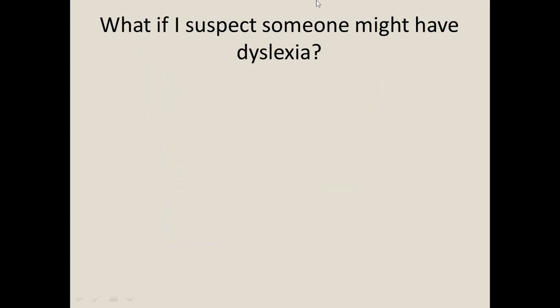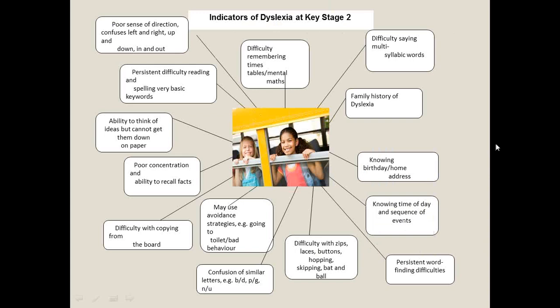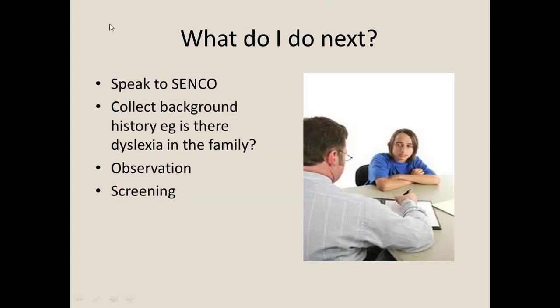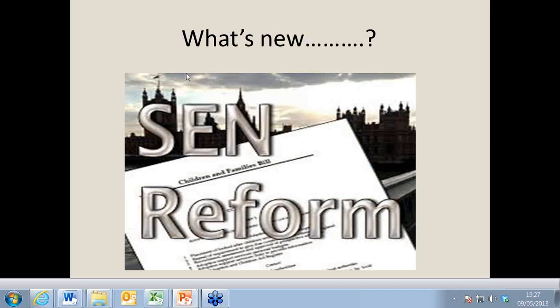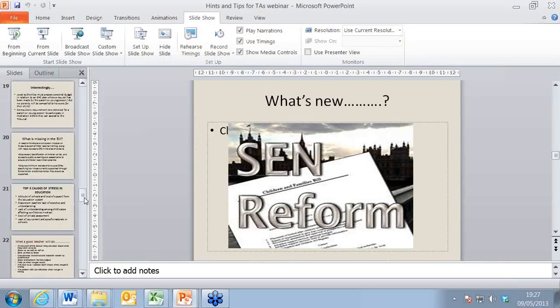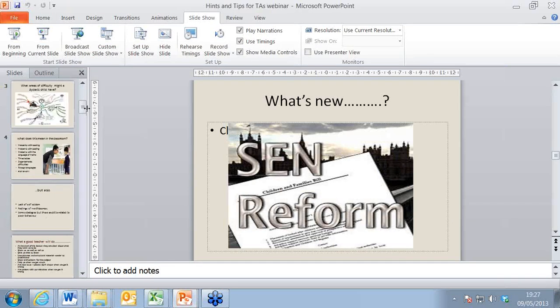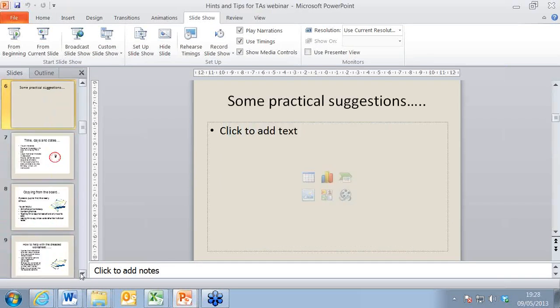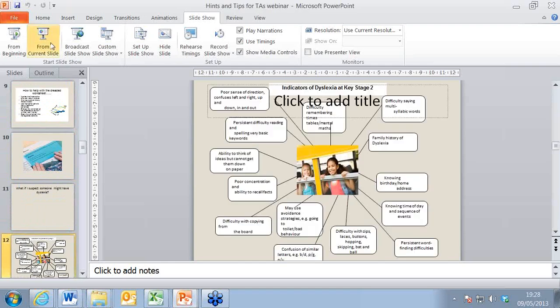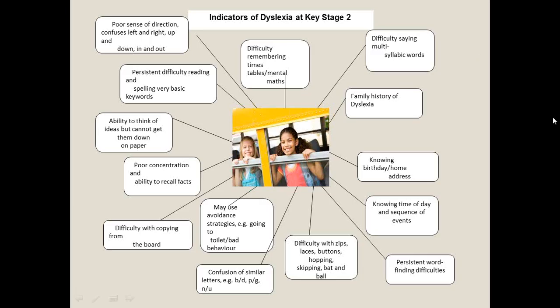Teaching assistants often ask: what do you do if you suspect someone might have dyslexia? It's a difficult thing to know. Shown here are indicators of dyslexia at Key Stage 2, and we have further ones for different key stages. This comes from the book we did last summer called 'From Dyslexia Friendly Schools', which contains a lot of information on indicators, checklists, and screening tools.